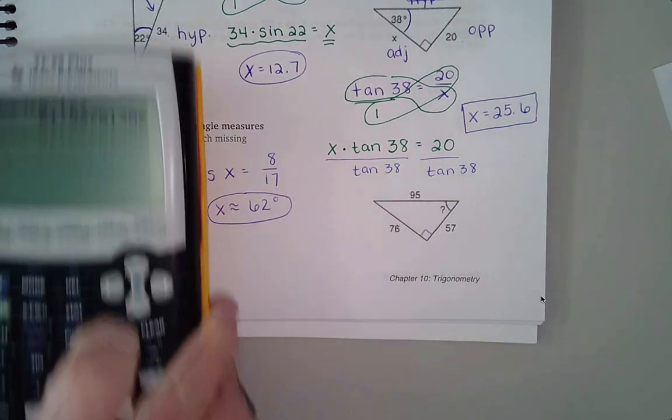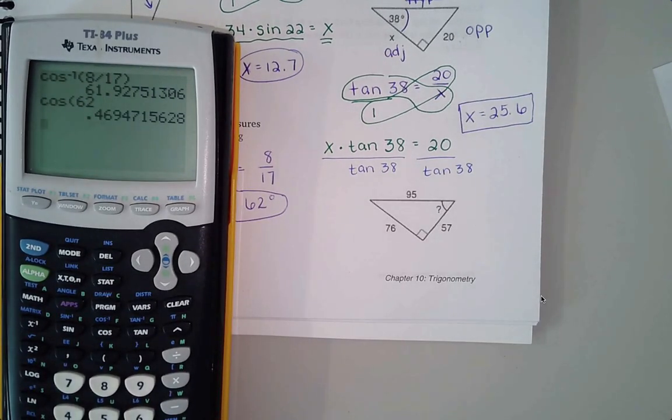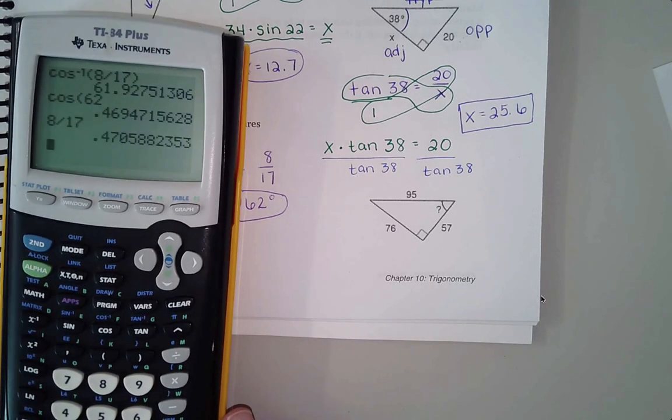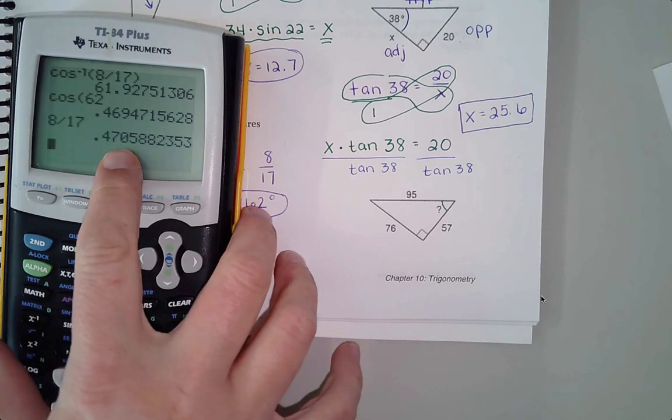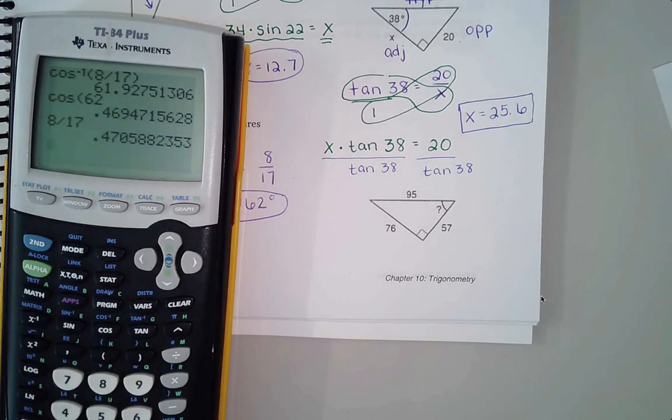And just to verify here, if I did the cosine of 62 degrees, I get this 0.469 number. If I do 8 divided by 17, I get something awfully close. The difference there is really just because of the rounding that we did back here with the 61.9.